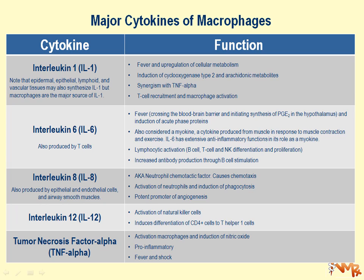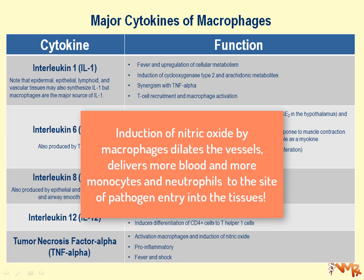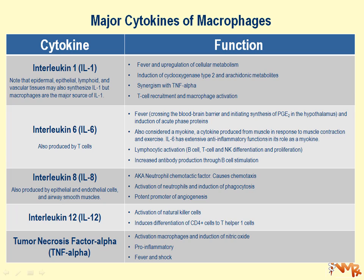Finally, the next important factor produced by macrophages is tumor necrosis factor alpha, TNF-alpha. This factor activates macrophages and induces nitric oxide. Nitric oxide is a vasodilator, which also explains edema formation as a result of inflammation. This factor is pro-inflammatory and causes fever.